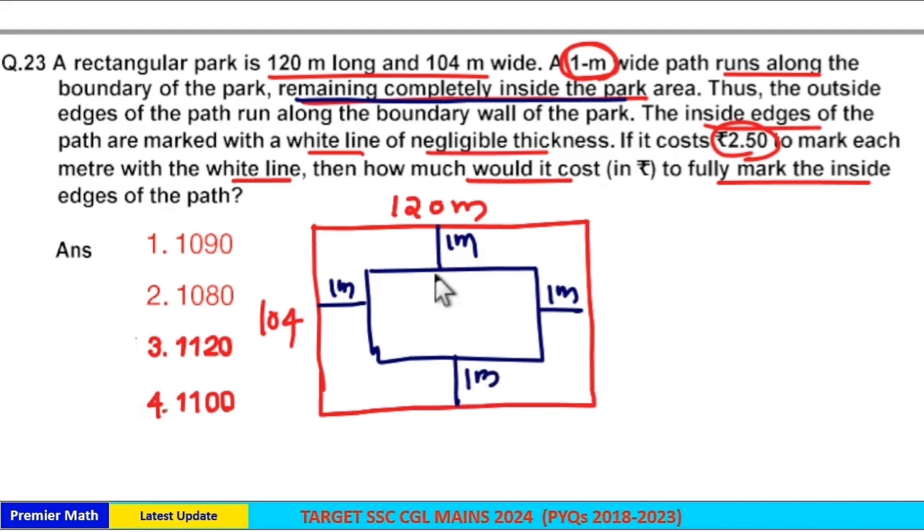Now, this inside edge rectangle length is equal to 120 minus 2, that is 118, and the width of this inside edge rectangle is equal to 102. And here this inside edge has negligible thickness.